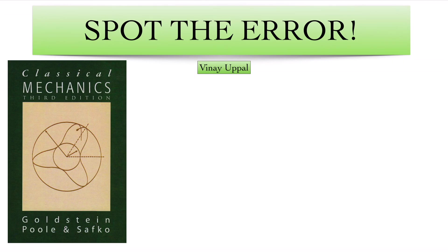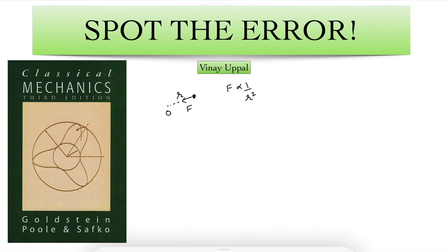Let me first explain what the cover page diagram is all about. Suppose you consider a gravitational force under which a particle is performing motion. So let's say that you have a particle which is experiencing a central force directed towards the point O always. And if that force was proportional to 1 by R squared, it is an attractive force — like gm1m2 by R squared, an attractive force.